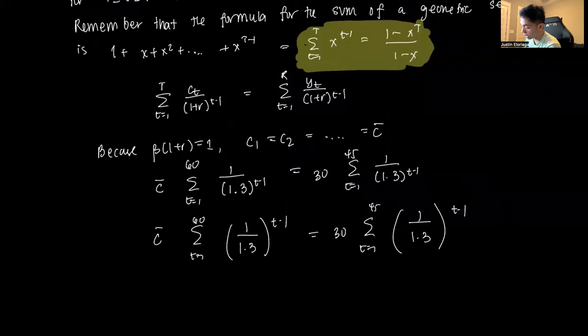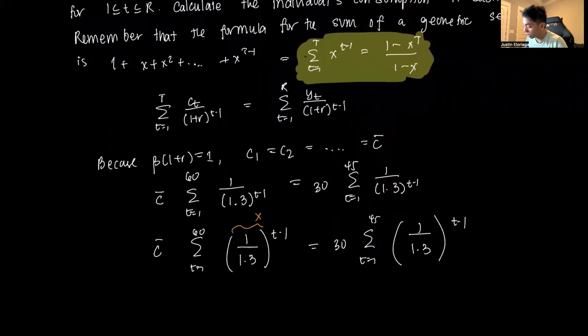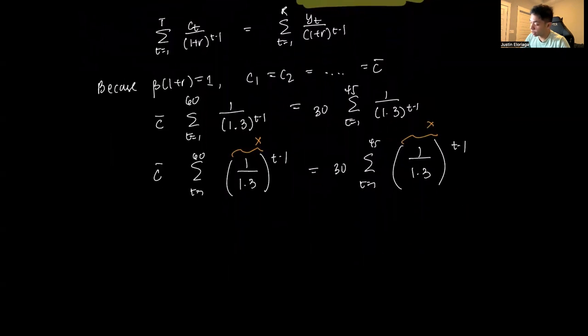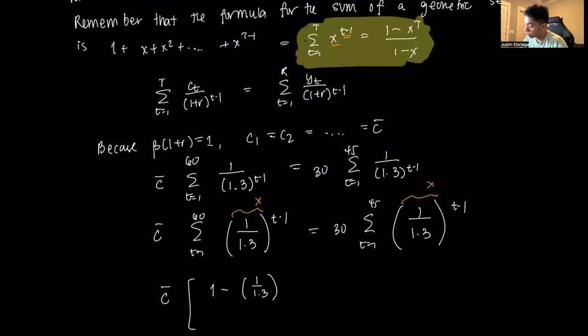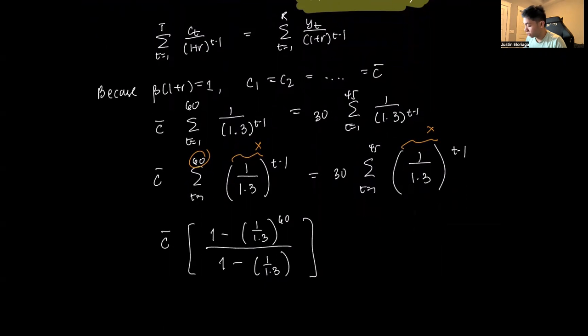I can use the property of geometric sums. Think of the components inside as x raised to t-1. This is effectively C-bar times (1-(1/1.3)^60)/(1-1/1.3) equals 30 times (1-(1/1.3)^45)/(1-1/1.3), where the summation's final time is 45.